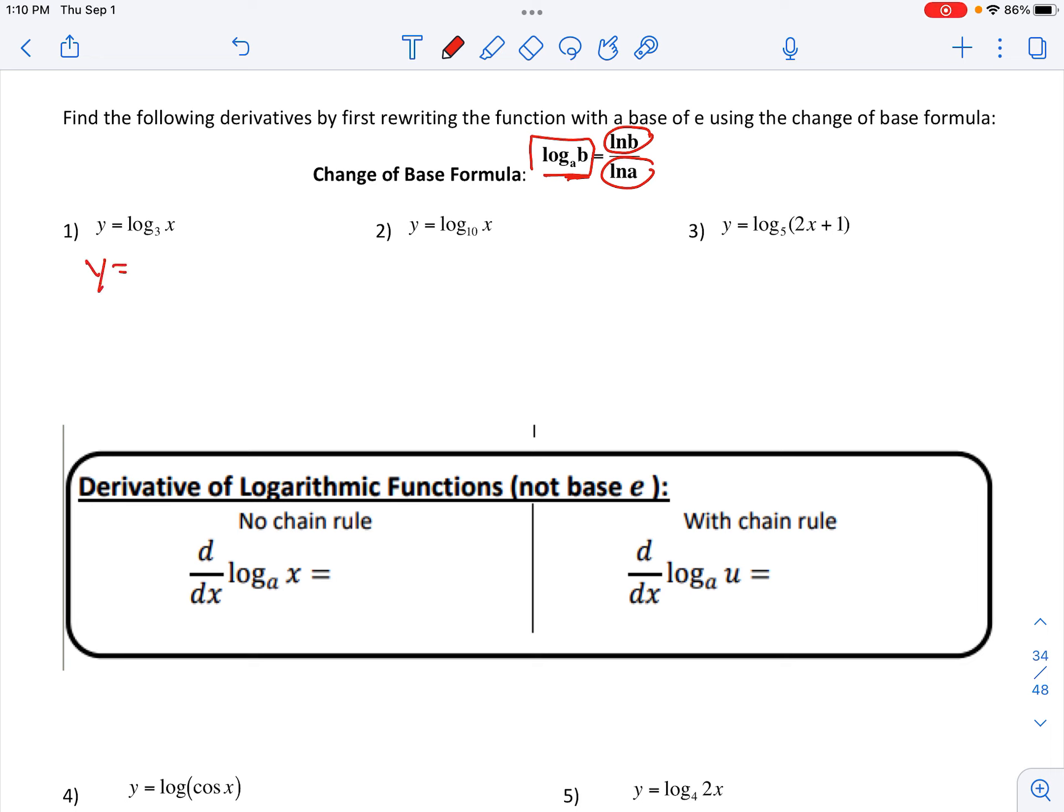So the first problem here, this can be rewritten as natural log of x over natural log of 3. Now once you rewrite it like this, I do know how to take the derivative of the natural log. Remember this, you do not have to use the quotient rule. Natural log of 3 is a number. So really, that's just your constant multiple. So any numbers just get multiplied with whatever that derivative is that has the variable. So we're going to pull this out, and then multiply by whatever the derivative of natural log of x is, which is just 1 over x.